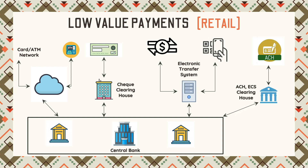The next one is ACH or ECS — Automated Clearing House or Electronic Clearing System — which is typically used for recurring or bulk payments, such as EMI payments or salary payments. Every country that hosts an ECS or ACH would have their own clearing house, which acts as an interface between the banks. Lastly, cash, which is the oldest, is again provided by the central bank and the banks to the population. To summarize, for low value payments in a given country, we have a card network, a check clearing house, an electronic money transfer system, ACH, and cash.